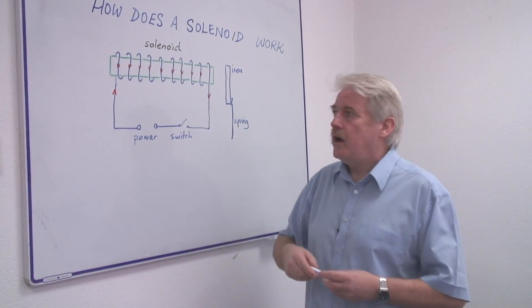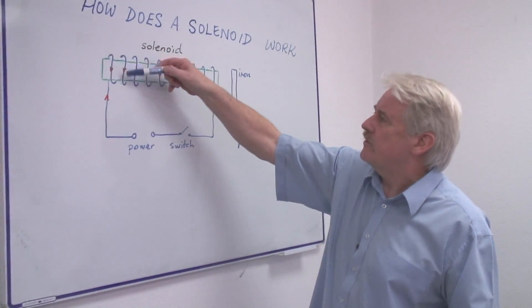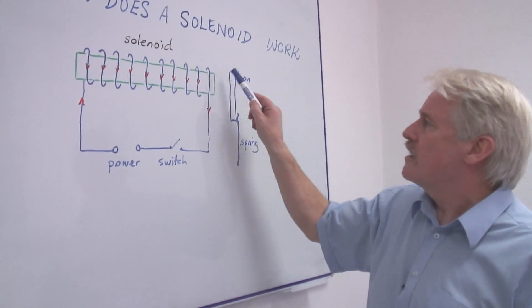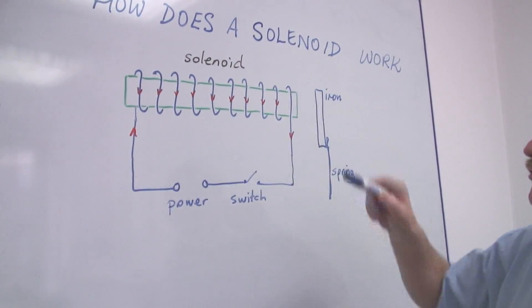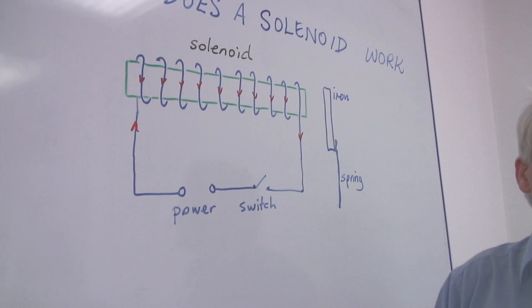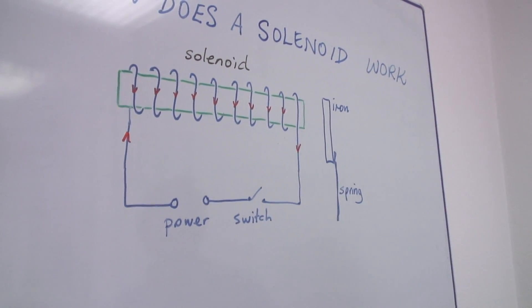This is usually copper wire and as you can see here it's coiled around like this, around some kind of former. This may be cardboard, it may be some other material, maybe plastic.